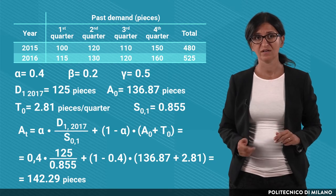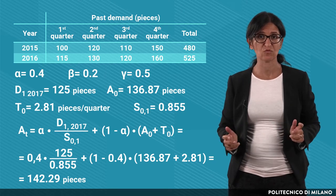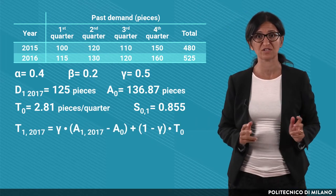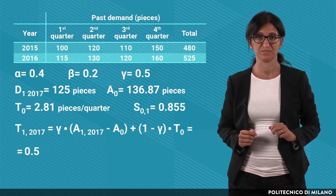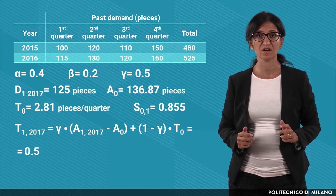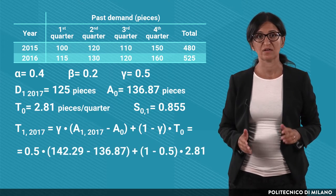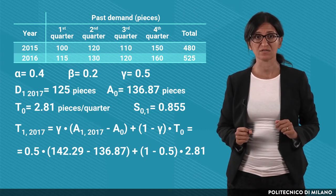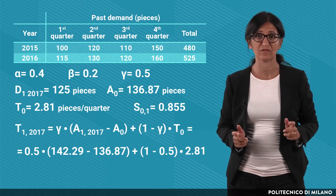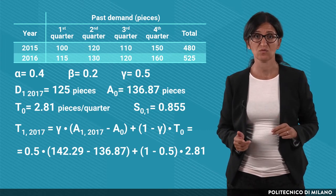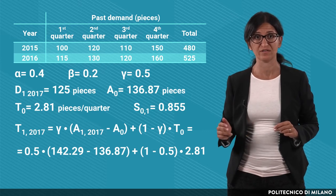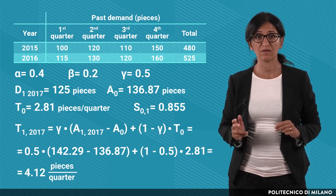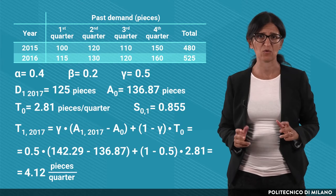This value is higher than before, which means that the demand is increasing. Now we can update the trend using the smoothing coefficient gamma equal to 0.5. The value of the trend in the first quarter of 2017 is obtained from the weighted average between the previous trend T0 = 2.81 and the proxy of the new trend, assessed as the difference between the new value of the average, 142.29, and the previous one, 136.87. We obtain about 4 pcs per quarter — still a quite limited trend.